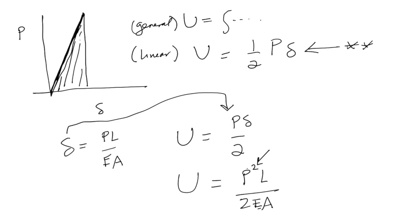Another expression is we can rewrite this to be Delta EA over L equals P. So we just rearranged to get here. And then we can, rather than eliminating Delta, we can eliminate P. And so now we're going to plug this expression in for P, and we get Delta squared EA over 2L. So these are the two equations of importance for strain energy.